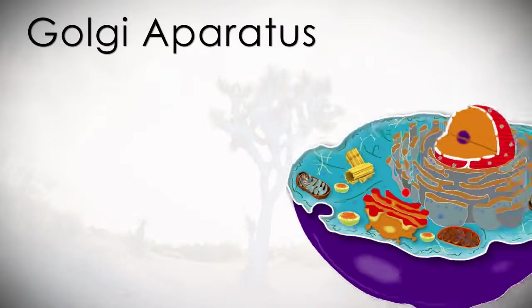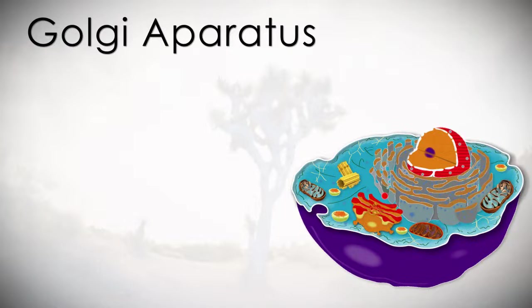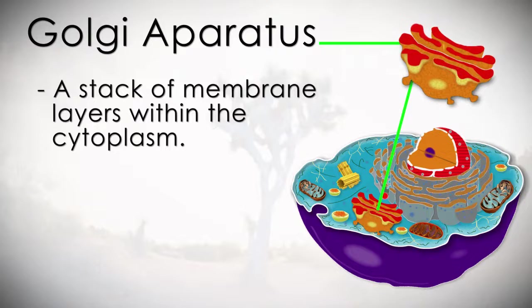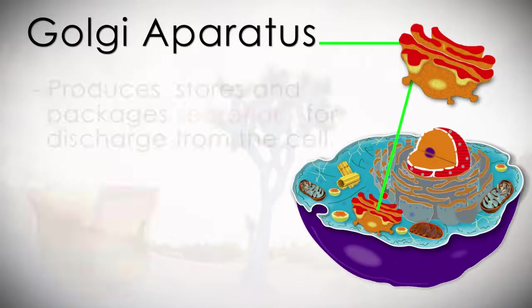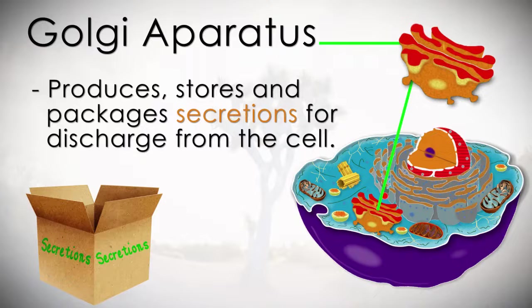Next is the Golgi apparatus. This is a stack of membrane layers within the cytoplasm. It produces, stores, and packages secretions for discharge from the cell.